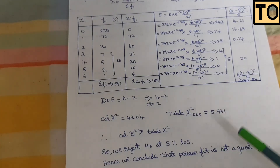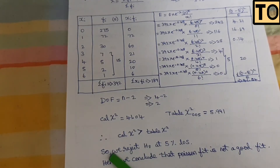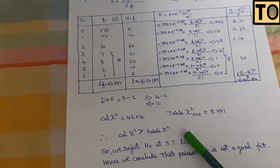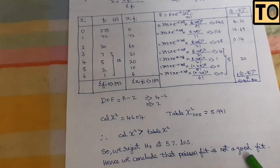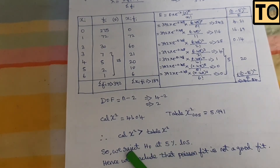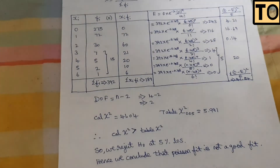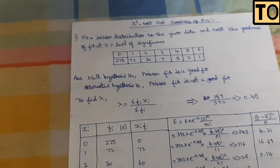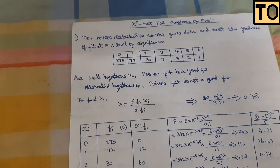Since the calculated chi-square value is less than the table value of 5.991, we have a good fit — meaning the Poisson distribution is a good fit for the given data. This video is useful. In the next video we will talk about Binomial Distribution. Please share this video with your friends and subscribe to our channel. Thank you.